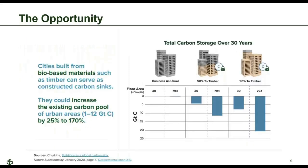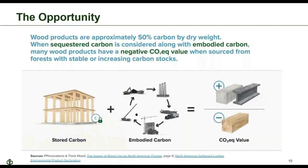So what happens if we start building with more wood? We have the opportunity to increase the carbon pool in our urban areas while maintaining and growing our forests. Harvested wood products act as a carbon sink when incorporated into buildings, and that carbon is stored in the structure over the life of the buildings. In the meantime, other trees regrow in the forests where the harvested trees came from, adding to the carbon stored in the forest sector overall. At the same time, carbon is not being released from the production of other materials such as concrete and steel.